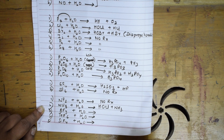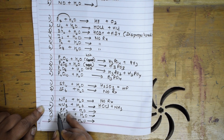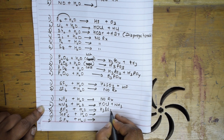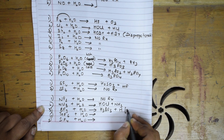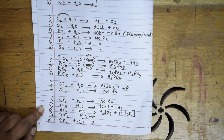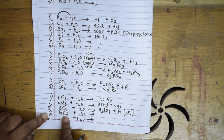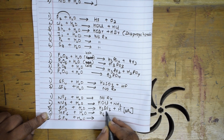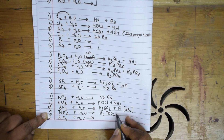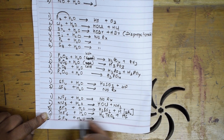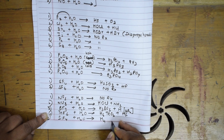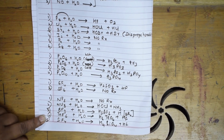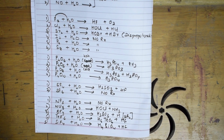For BF3 plus water, the products are H3BO3 and also a complex HBF4. For tellurium fluoride TeF6 plus water, the product is H2TeO6 plus HF. For SiF4 plus water, the product is H2SiO4 plus HF. I have classified these together as fluorides.